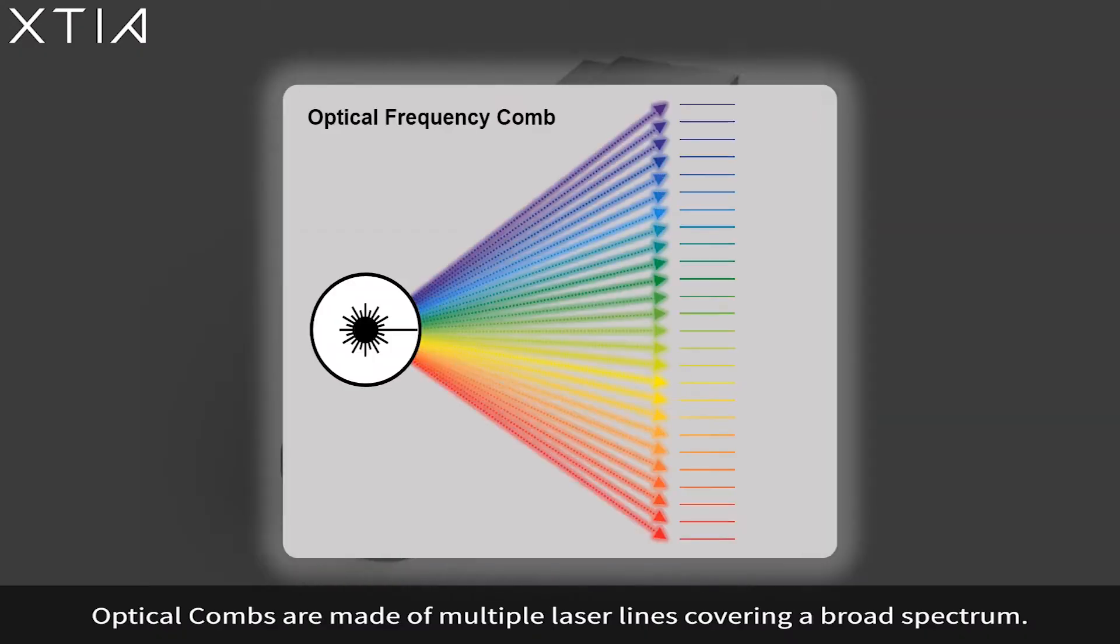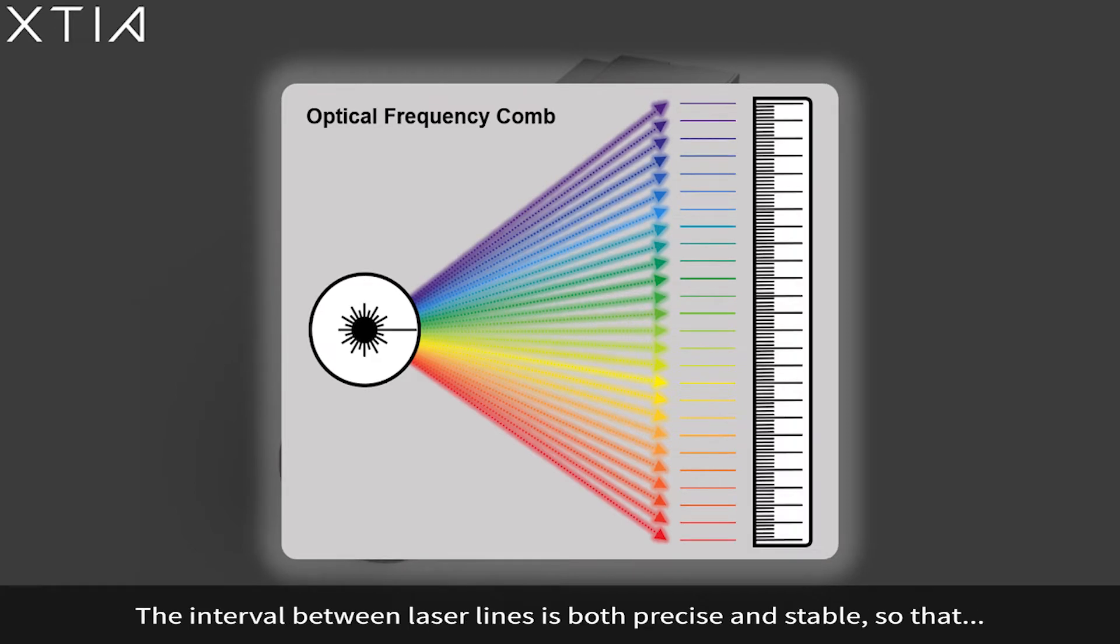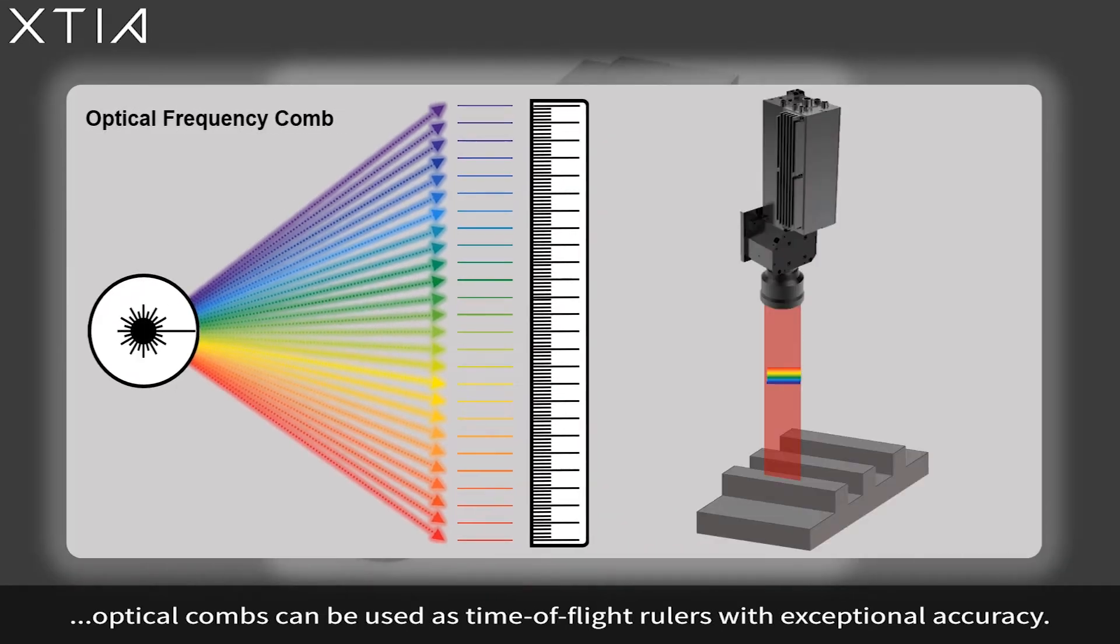Optical frequency combs are made of multiple laser lines, covering a broad spectrum. The interval between laser lines is both precise and stable, so that optical frequency combs can be used as time-of-flight rulers with exceptional accuracy.